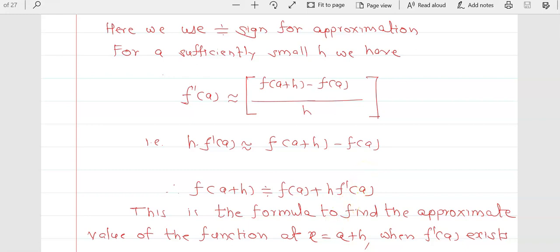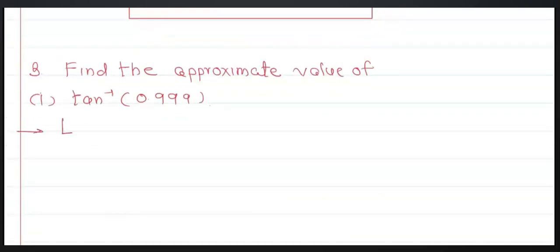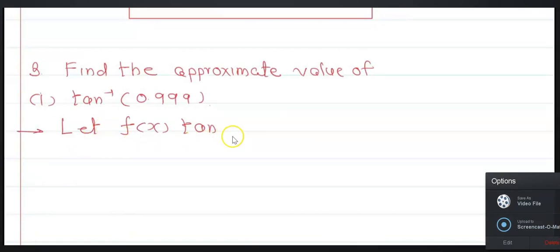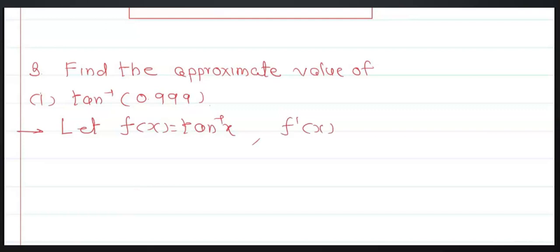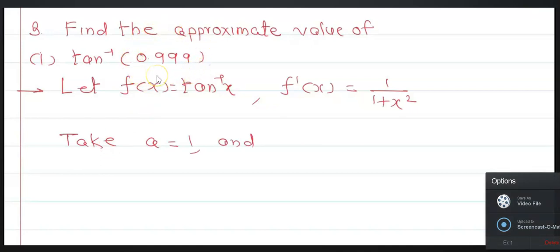Now let us start question number 3: Find the approximate value of tan⁻¹(0.999). Let f(x) = tan⁻¹(x). The derivative is f'(x) = 1/(1+x²). Take a = 1, since the nearest value to 0.999 is 1. Then h = 0.999 - 1 = -0.001.